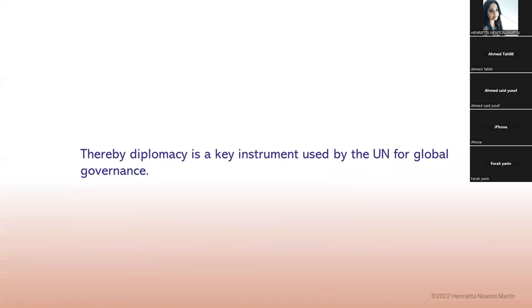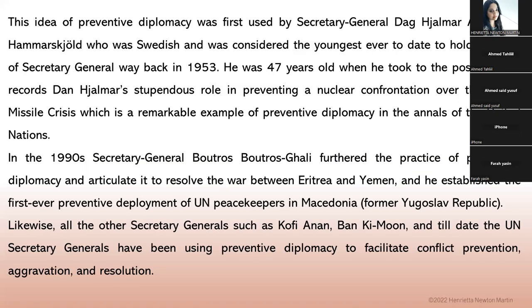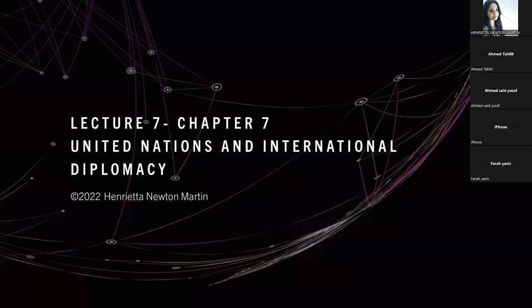Thereby, diplomacy is a key instrument used by the UN for global governance. In chapter seven, we are learning about United Nations and international diplomacy. You can expect this to come for your exams in the form of short notes, as chapters seven and eight are short chapters.